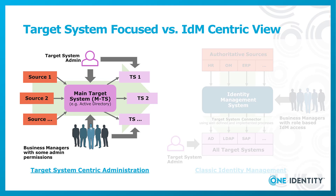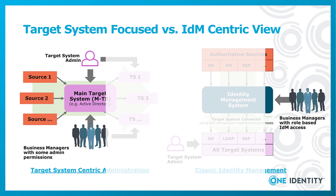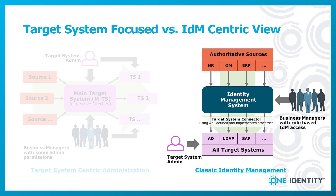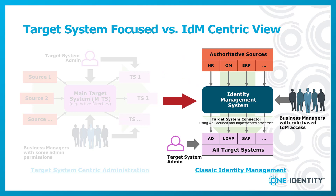This is what we name the target system centric administration, and in opposite to that exists on the right hand side the classic identity management approach. In this specific approach we have one system more — the identity management system — and we have a clear structure. First of all there is something we name the authoritative sources. Authoritative sources could be an HR system, an organizational management system, and so on, and they deliver data which is authoritative for the identity management system.